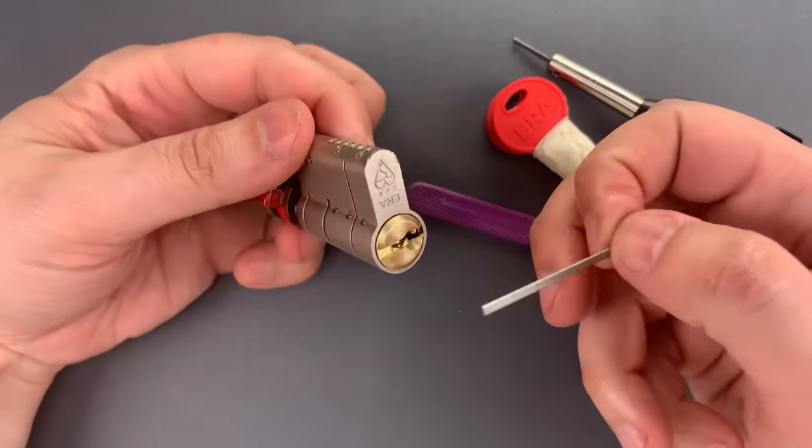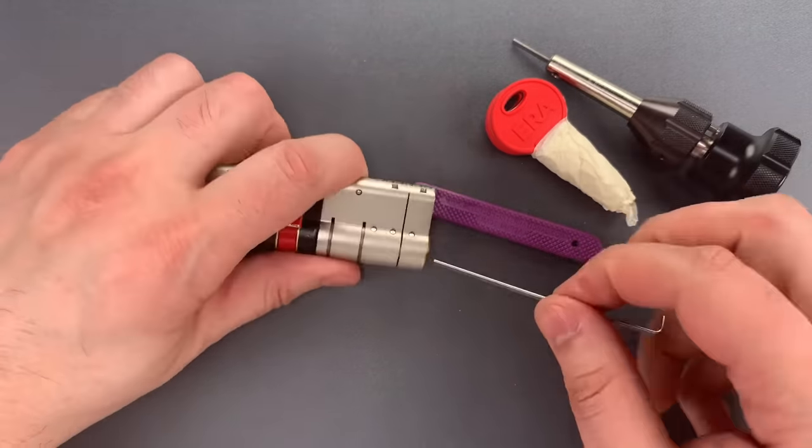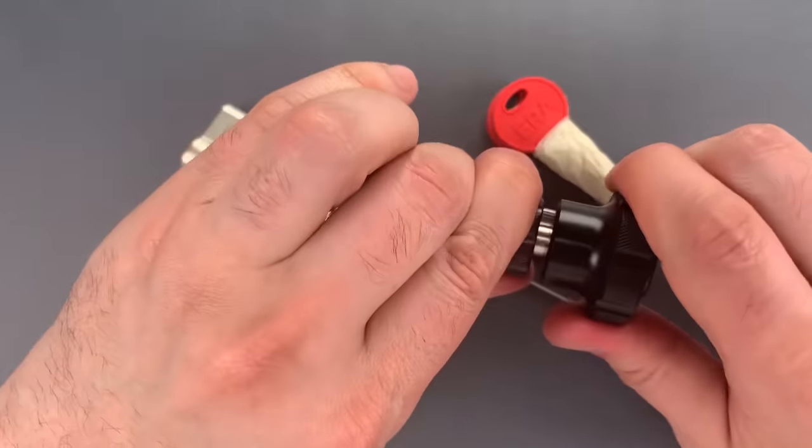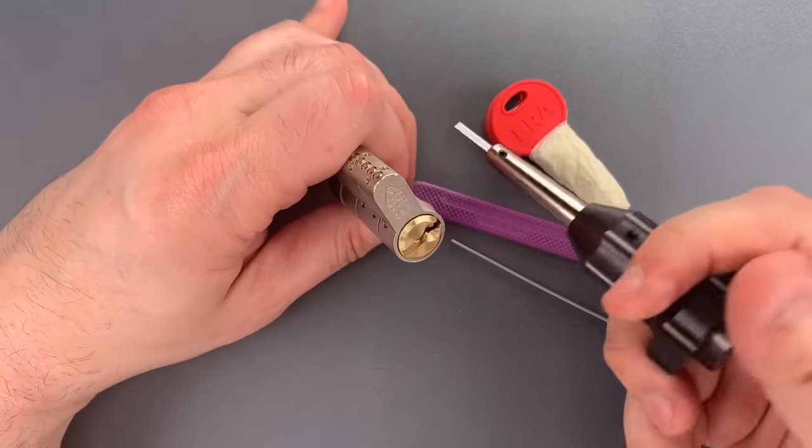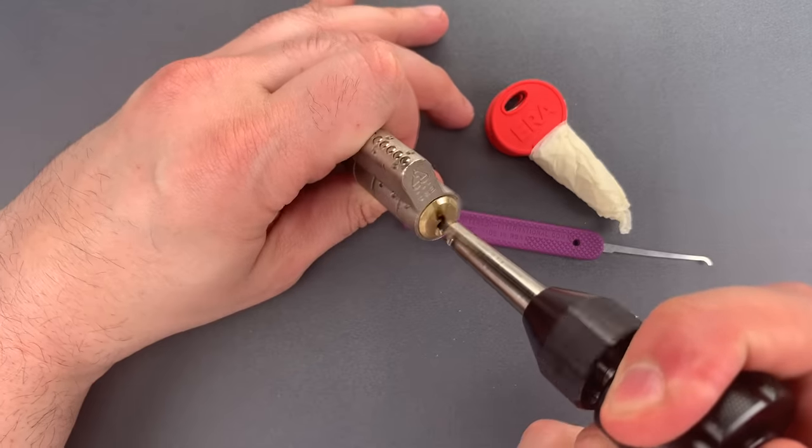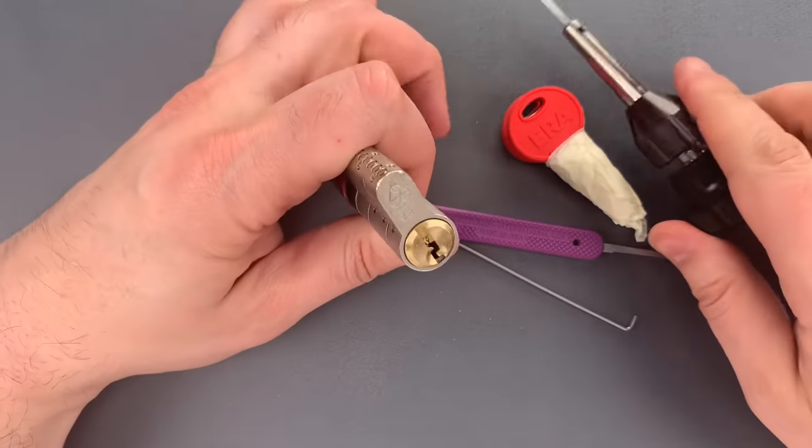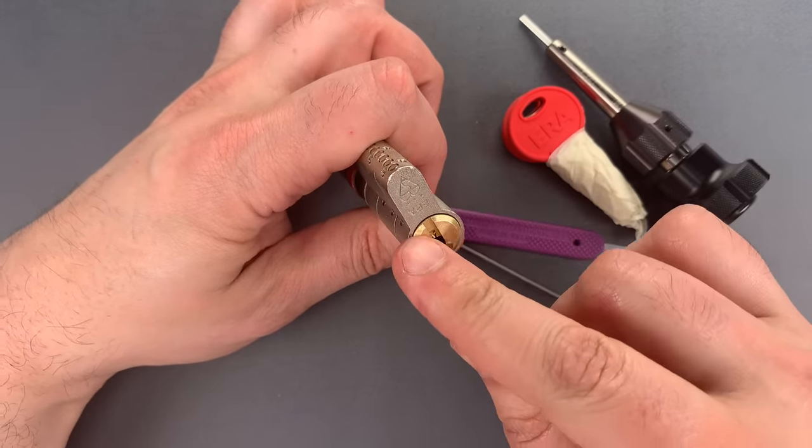And finally, we need to flip the core again past this set of trap pins and we have it back to the 12 o'clock position for a full 360 degree turn.